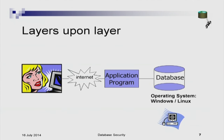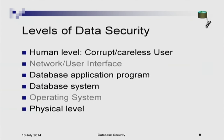A modern information system has users connecting over the internet, typically via mobile devices today, to an application program which accesses data in a database. That database system runs on top of an operating system such as Windows or Linux, and increasingly the database is not centralized but highly parallel. Underlying all of that is the actual disks and hardware on which the data is stored.